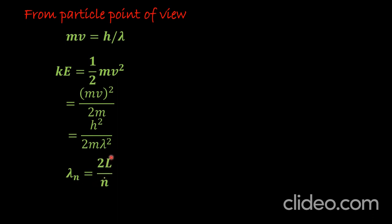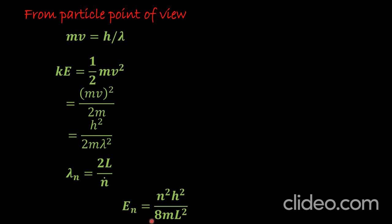Since lambda_N = 2L/N, putting this value of lambda into the kinetic energy formula gives: E_N = n²h²/(8mL²). Here E_N represents the energy level, N is the quantum number equal to 1, 2, 3, and so on. Each permitted energy is called an energy level, and N specifies the number of the energy level — it is the quantum number.